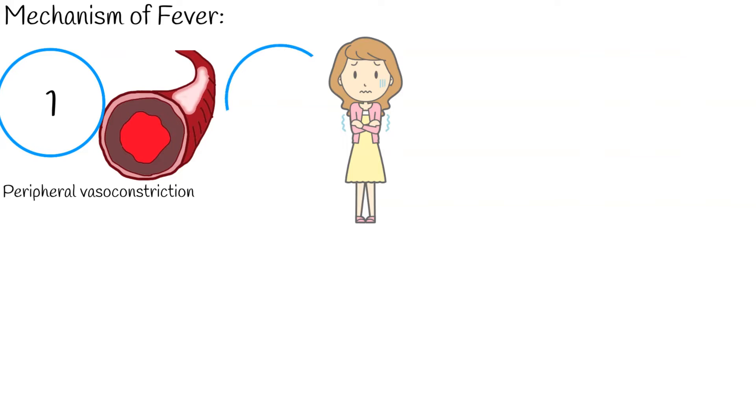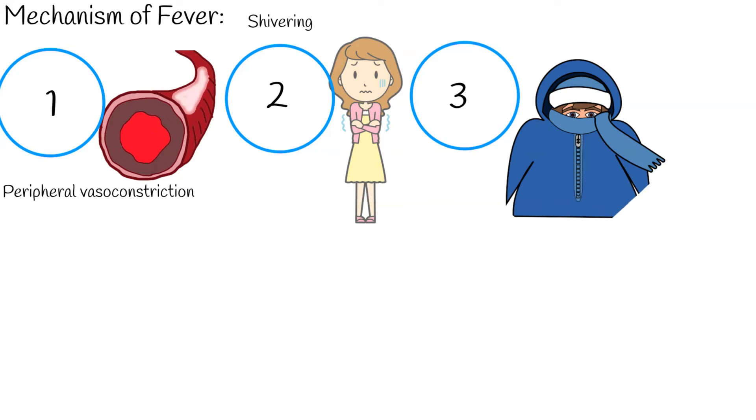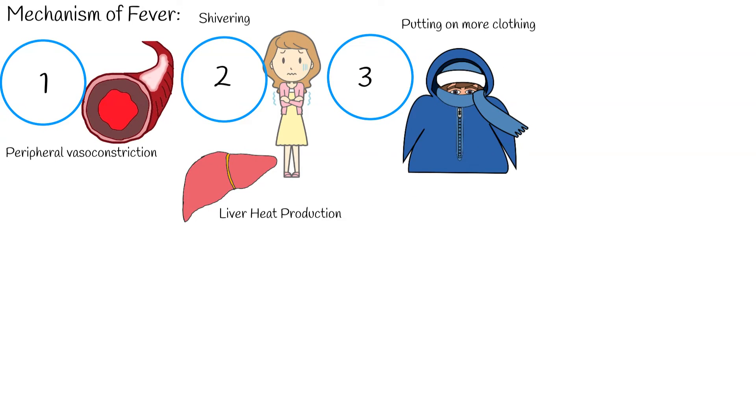The second mechanism is shivering, which causes muscle contraction and increases heat production. Third, when a person feels cold, putting on more clothing can further prevent heat loss. Another mechanism is liver heat production. The liver is metabolically active and always produces heat that is dissipated, but vasoconstriction prevents heat loss and body temperature increases sometimes without even shivering.